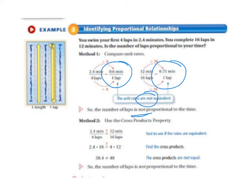So then you would take 2.4 times 16 and you're seeing if that is equal to 4 times 12. So you're cross-multiplying.